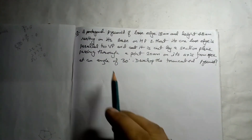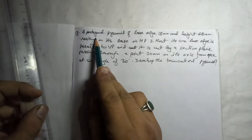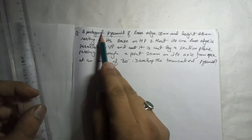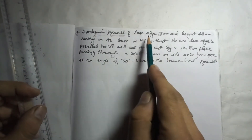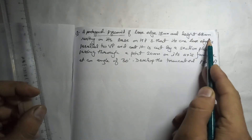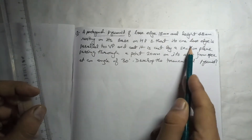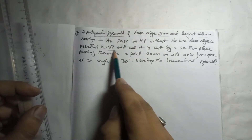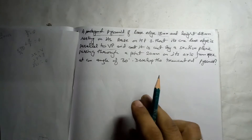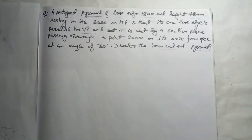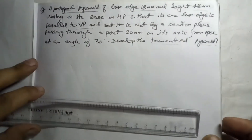We will solve one more question on the same radial line method. The question is about a pentagonal pyramid — pentagon has five sides. The parameters are: base edge 18 mm, axial height 48 mm, resting on its base on HP such that one base edge is parallel to VP. It is cut by a section plane passing through a point 20 mm on its axis, so this is a question of a truncated pyramid.